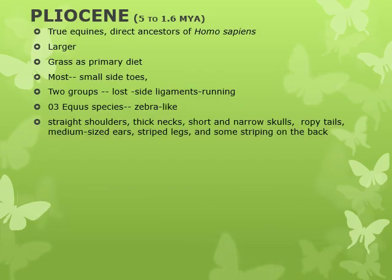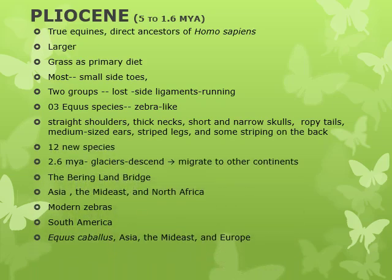The Pliocene is the period of development of the first species that could be considered true equines, as well as the first primate species that may be considered direct ancestors of Homo sapiens. Generally, horse species got larger and developed their ability to exploit grass as their primary diet. Most still had small side toes, but at least two separate groups lost those and instead developed side ligaments to help stabilize the central toe during running. Early Equus species were zebra-like with straight shoulders, thick necks, short and narrow skulls, ropey tails, medium-sized ears, striped legs, and some striping on the back. They quickly diversified into at least twelve new species, which co-existed with other one-toed horses evolving on their own paths.